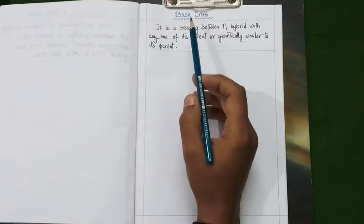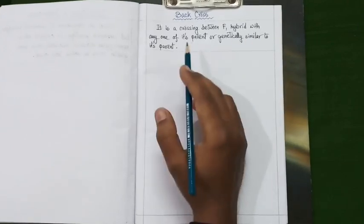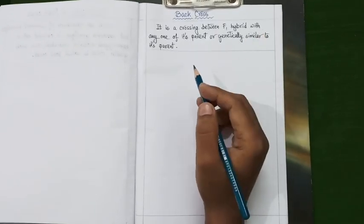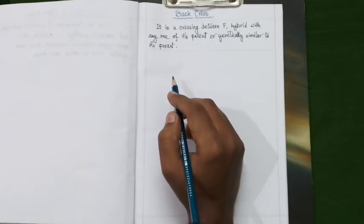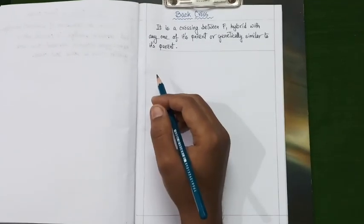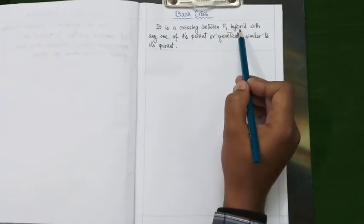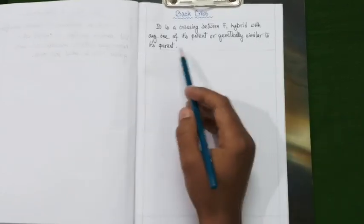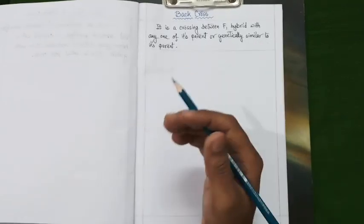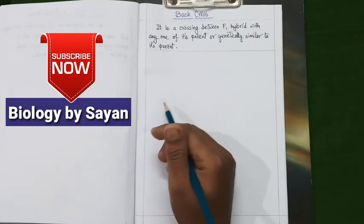In genetics, both the back cross and test cross have high significance, especially the test cross. But prior to knowing about the details of test cross, we need to know about the back cross. Back cross is a crossing between an F1 hybrid with any one of its parents or an individual genetically similar to its parent.